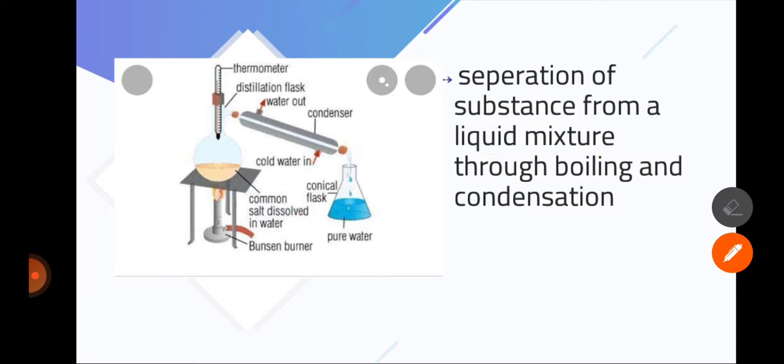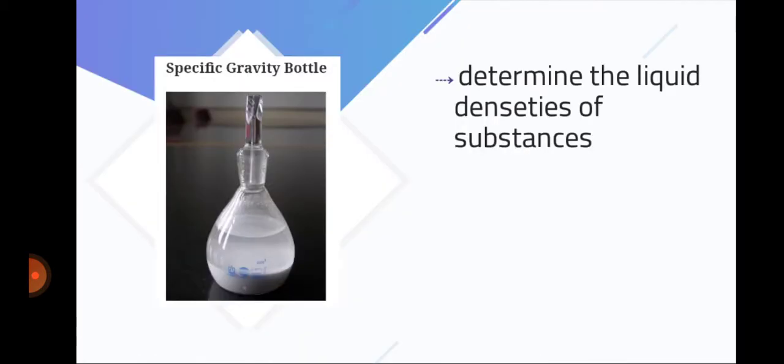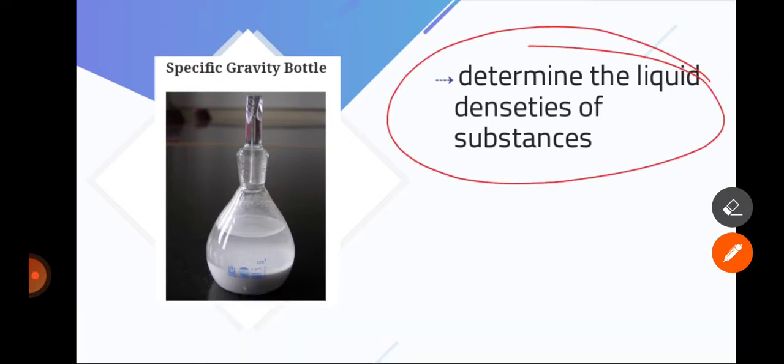Now next instrument is the specific gravity bottle. Specific gravity bottle determines the liquid densities of substances. So whatever liquid material, the densities of substances are determined using specific gravity bottle. So specific gravity bottle we have to identify. The main thing is identification and then writing about its function.